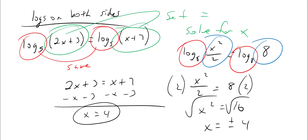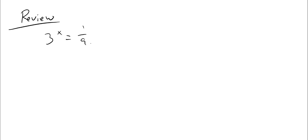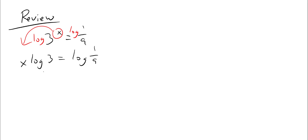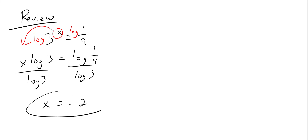That's only when logs are on both sides. Now a review from yesterday: three to the x equals one ninth. You take the log of both sides, bringing x to the front: x times log of three equals log of one ninth. Divide by log of three, and x equals negative two.